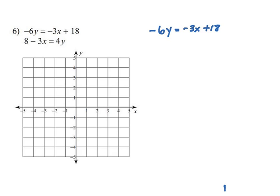We've isolated the y almost. All we have to do is divide everything by negative 6. So we have y equals 1 half x minus 3.